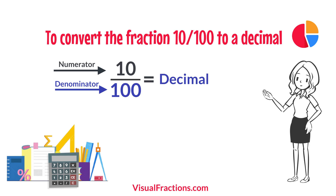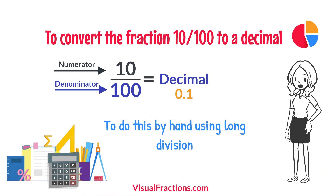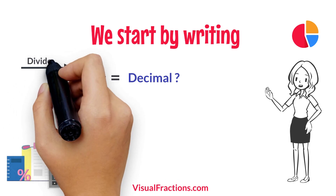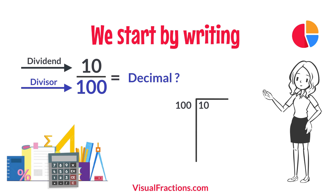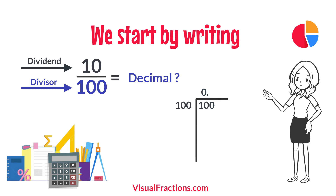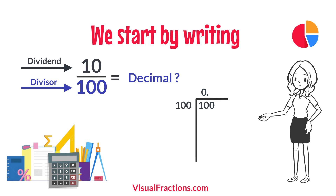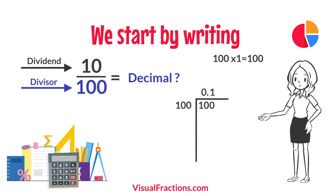The answer we get is 0.1. To do this by hand using long division, we start by writing 10 as the dividend and 100 as the divisor. Since 100 doesn't fit into 10, we add a decimal point in our answer and append a 0 to 10, making it 100. How many times does 100 go into 100? Exactly once. We write 1 after the decimal point in the quotient, making it 0.1.